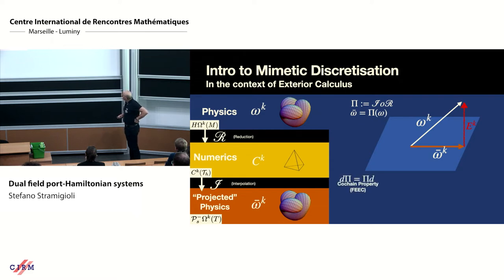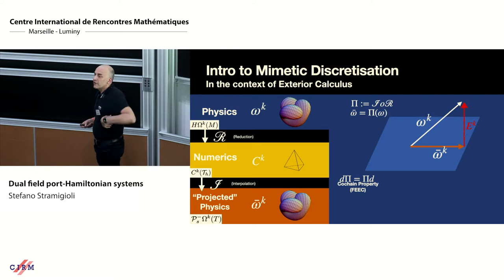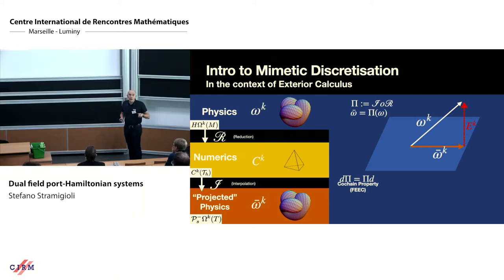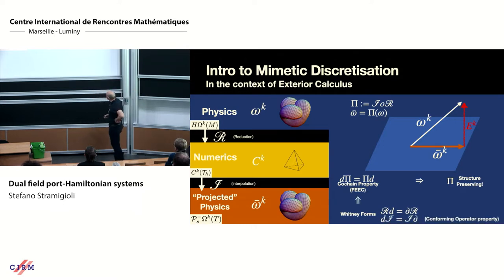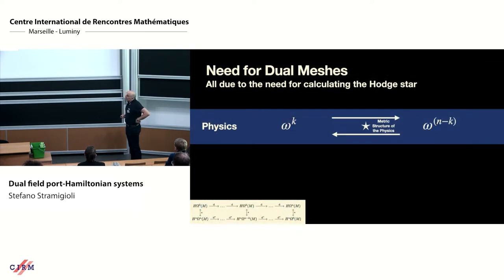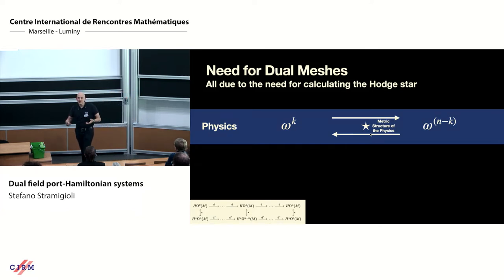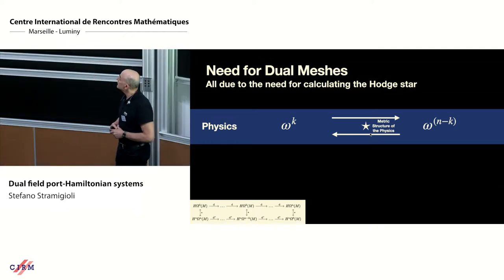Using FEC — as introduced by Arnold — you have what's called a cochain property: preservation of the commutation between the exterior derivative D and the projection π. This means you preserve the topology of your problem, making it structure-preserving. Using Whitney forms as a special case in a fixed setting, you also preserve separately the reduction and interpolation, which is called the conforming operator.